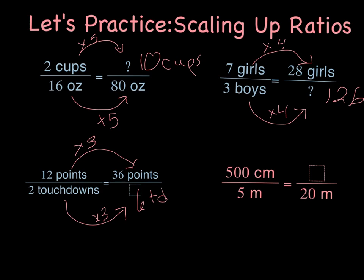On the last question, I have five hundred centimeters is the same as five meters ratio. To get from five meters to twenty meters, I would multiply by four. So then I need to multiply five hundred by four, which would give me two thousand. Because five times four is twenty, plus the two zeros would give me the two thousand.